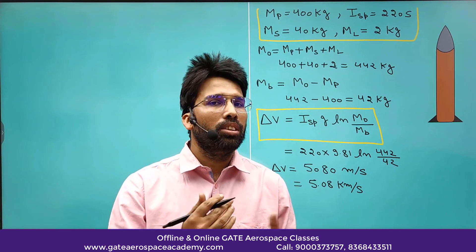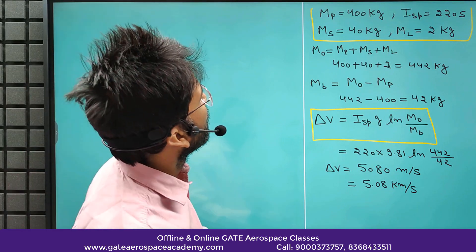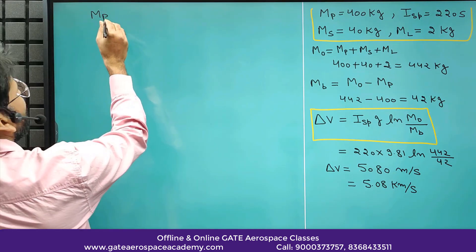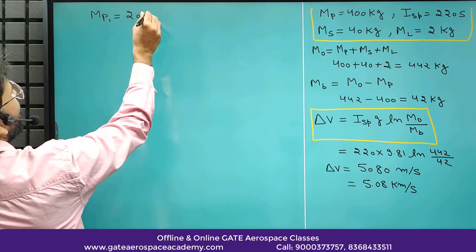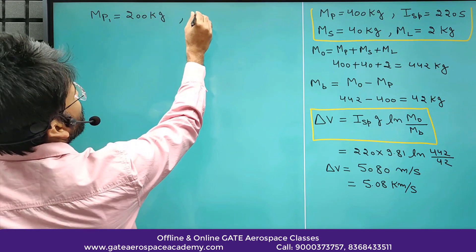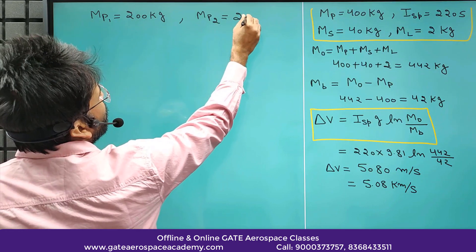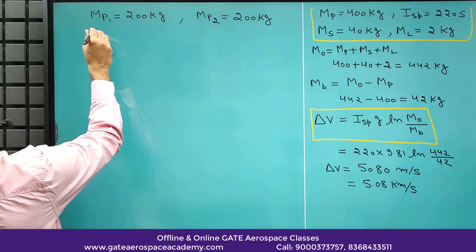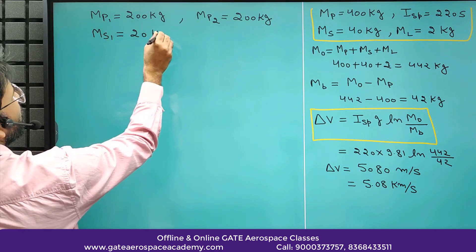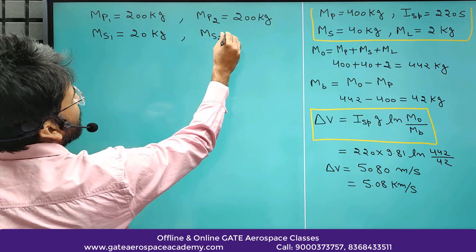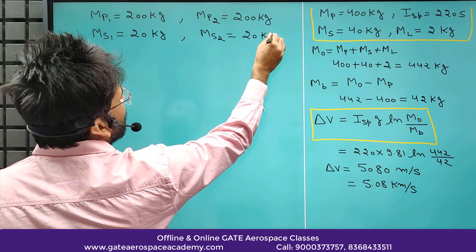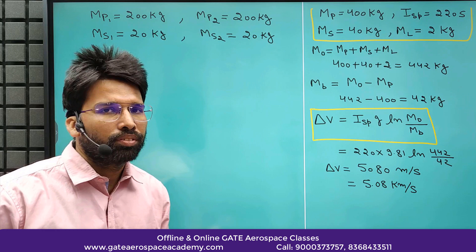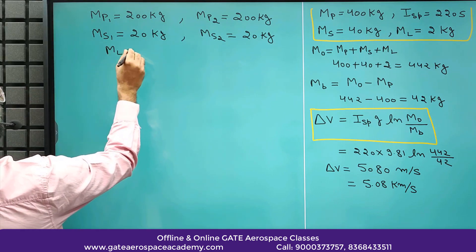Now let's do the calculation for the double stage rocket. We divide the propellant mass into 2 equal parts: for stage 1, mp1 equals 200 kg; for stage 2, mp2 equals 200 kg. Similarly, the structural mass of the first stage is 20 kg and the structural mass of the second stage is also 20 kg. For simplification, we assume there is negligible change in structural mass because of double staging. Mass of the payload ml remains the same at 2 kg.